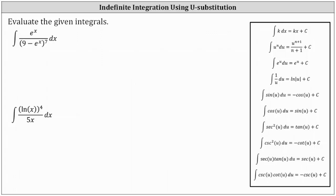Because the denominator contains a base of 9 minus e to the power of x, the derivative of 9 minus e to the power of x is going to resemble the numerator e to the x. We also want the base of 9 minus e to the x to equal u because it is raised to the power of 7.